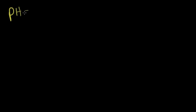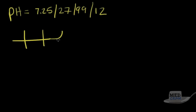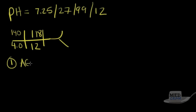Next question: pH is 7.25, pCO2 is 27, O2 is 99, bicarb is 12. The CHEM7 shows sodium 140, potassium 4.0, chloride 118, and bicarb 12. First step — calculate the anion gap: 118 plus 12 is 130, and 140 minus 130 equals 10. There is no anion gap metabolic acidosis.